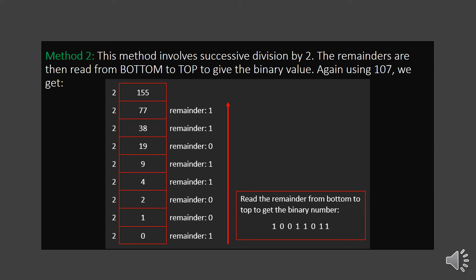This is Method 2 for converting a given decimal number into binary: the successive division method. We divide the given decimal number by the base value of binary, which is 2. Each time we divide, we get a quotient and a remainder, which is written on the right hand side. For example, dividing 155 by 2 gives quotient 77 and remainder 1. Then we divide 77 by 2 to get quotient 38 and remainder 1. We continue until the quotient reaches 0, then read the remainders from bottom to top to get the binary number.